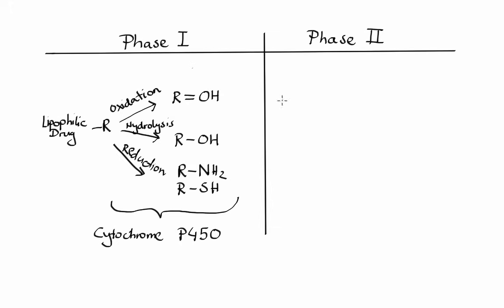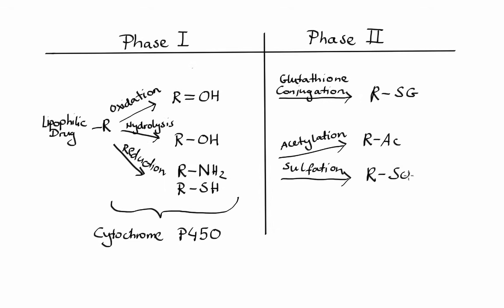In phase 2, we are going to see glutathione conjugation, acetylation, sulfation, and glucuronidation. These reactions produce polar conjugates, which cannot diffuse across membranes. Therefore, they are easily eliminated from the body. Now, let's go back to cytochrome P450.